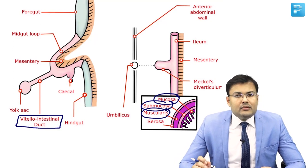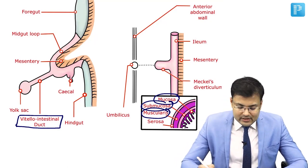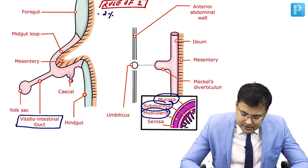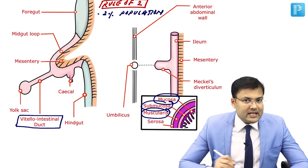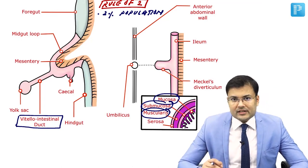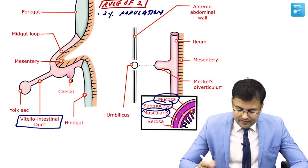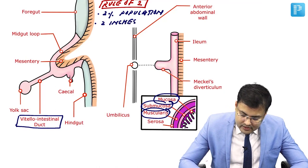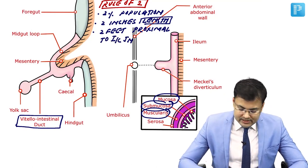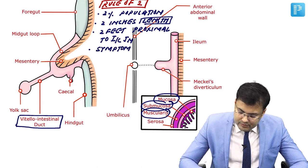Meckel's diverticulum is characterized by the rule of two. First, it is seen in 2% of the population. The length of Meckel's diverticulum is two inches. Its location is two feet proximal to the ileocecal junction. And most symptomatic patients are less than two years of age.